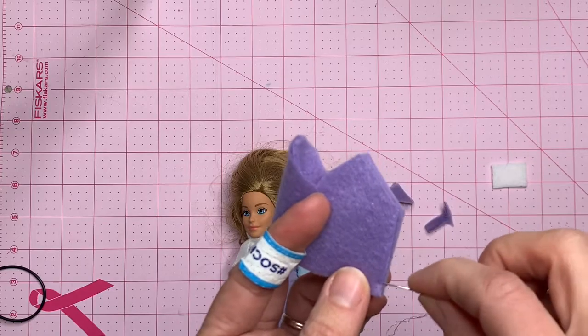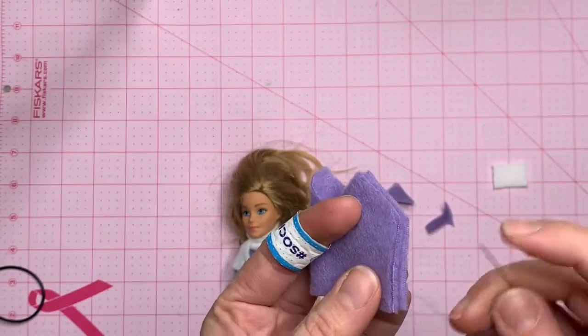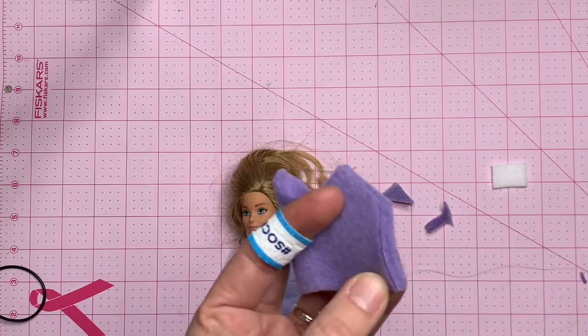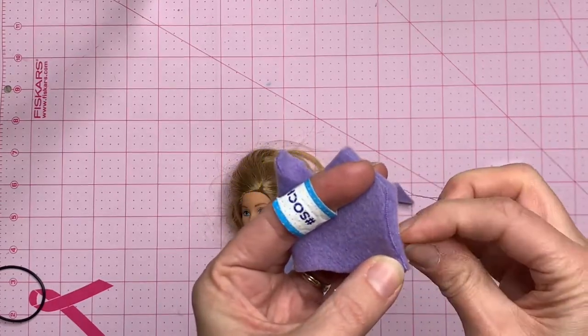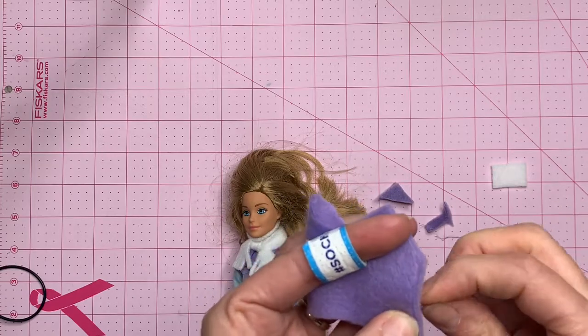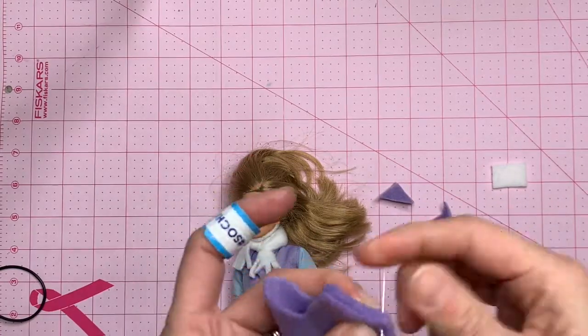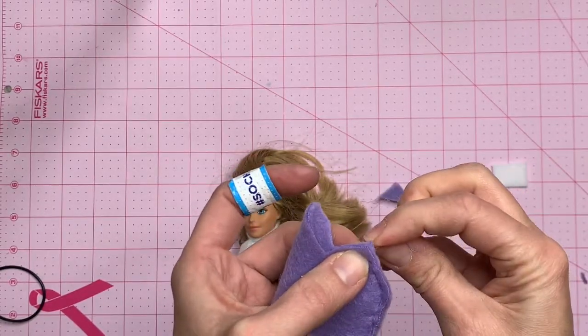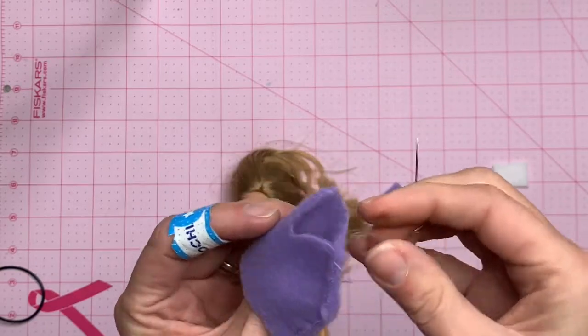I'm going to sew this piece together first, so this long edge and this piece, and then I'm going to sew these pieces together. I'm just going to use a very simple straight stitch. I'm going to go close to the edge so there's not a lot of seam allowance and there's not a lot of bulk.